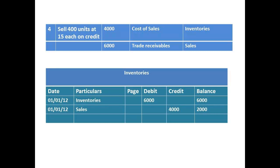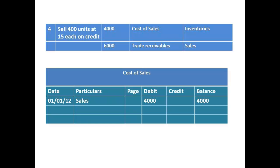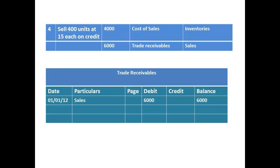We then sold 400 units. First, the entry to the asset account of inventories — we use a separate line for each entry. Note that in the last column, we have recalculated and entered the new balance of £2,000. Now the corresponding entry for cost of sales to show a new balance of £4,000. We record the amount that we expect to receive from the credit sale in trade receivables, and the revenue from the sale as a credit in the sales account.